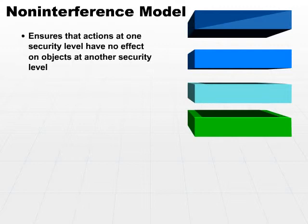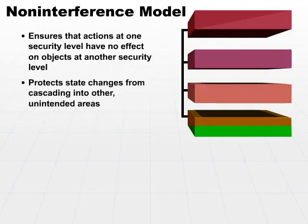So you see how these are starting to complement one another? We have seen some properties of other models that enforce this concept, but this is a much larger concept, basically making sure that all the changes I make only affect objects at one security level. It protects state changes from cascading into other unintended areas.